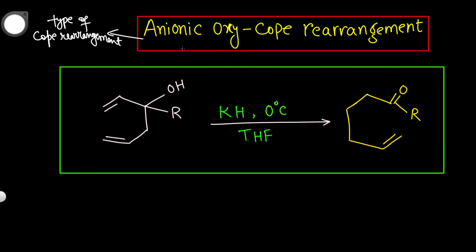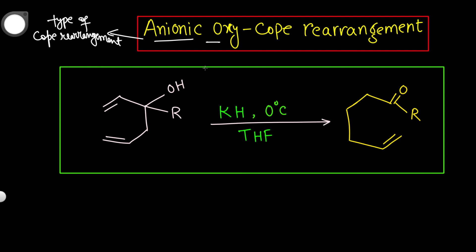You can ask why the name is 'anionic oxy.' Basically, there is an OH group present, and we have taken a base. The base will take a proton from this OH, and then the OH will be converted into an anion — O minus. This O minus is called 'oxy,' so that's why the name is anionic oxy Cope rearrangement. This is just a variety of a Cope rearrangement.